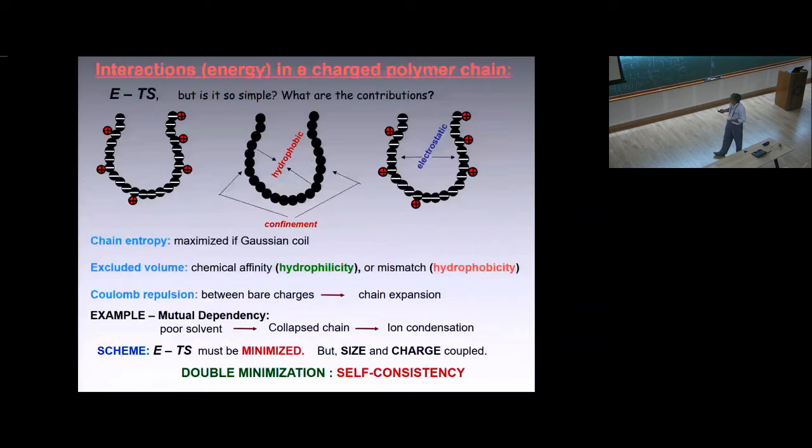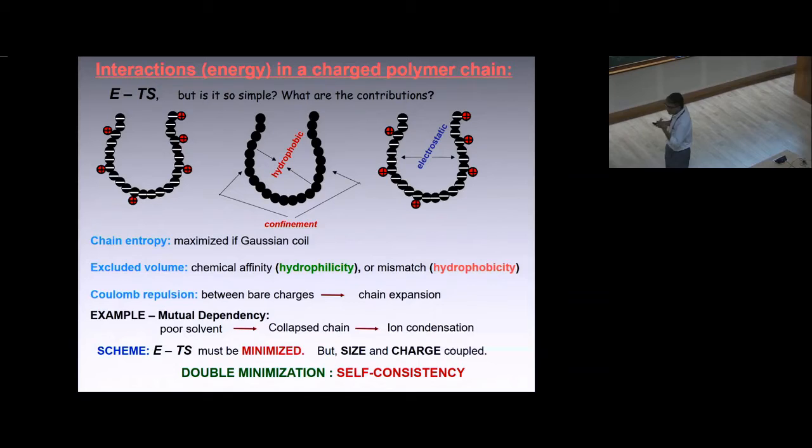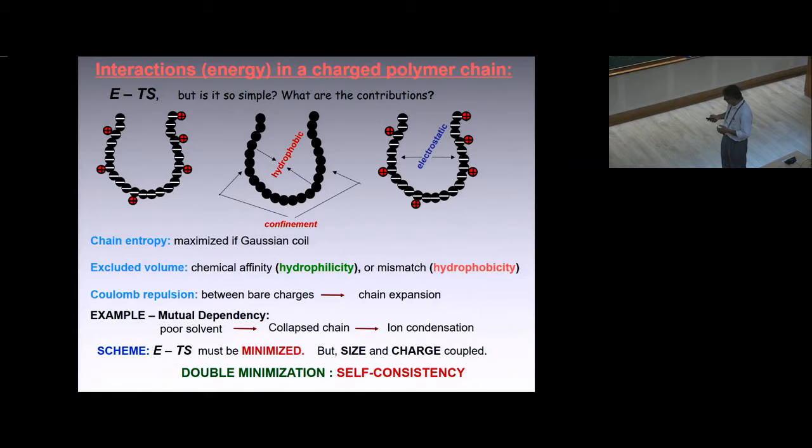Within a polymer, if you think about a single chain, there are two major interactions between monomers. Hydrophobic interaction will try to confine the polymer, electrostatic interaction will try to expand it. In a confined polymer, all counter ions will be collapsed, otherwise there's huge electrostatic energy cost. It's a self-consistent cooperative effect between size and charge. To get equilibrium, one has to ideally double minimize the free energy to get both charge and size.